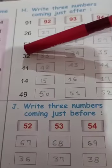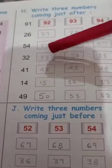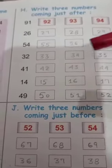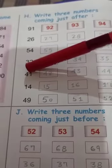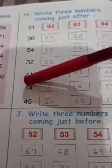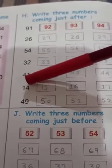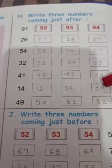Similarly 32, forward counting of 32 is 33, 34, 35. Similarly 41, forward counting of 41 is 42, 43, 44. 14, forward counting of 14 is 15, 16 and 17.